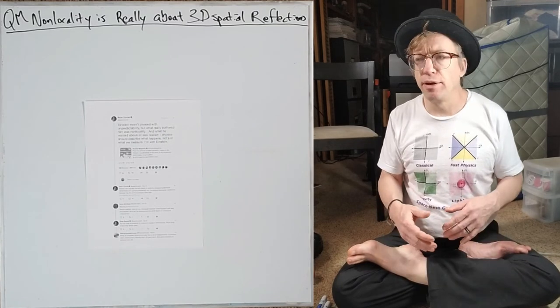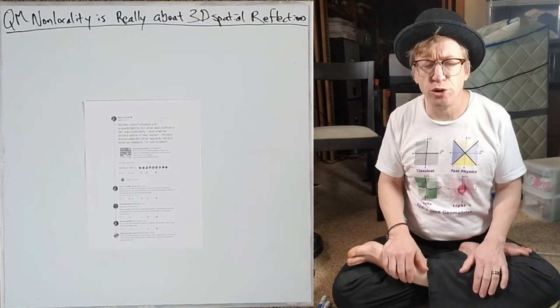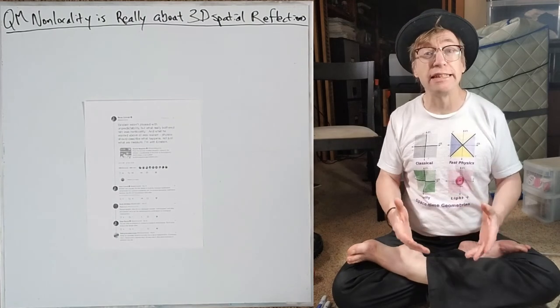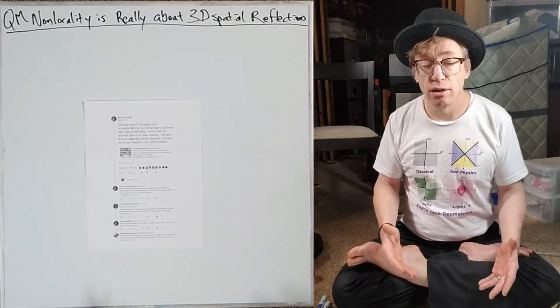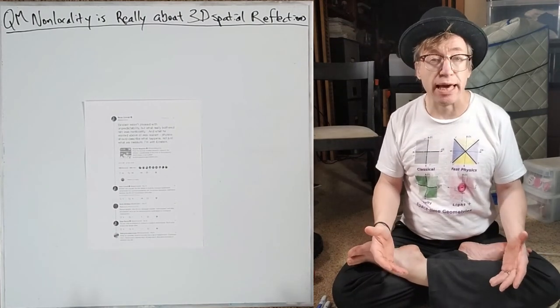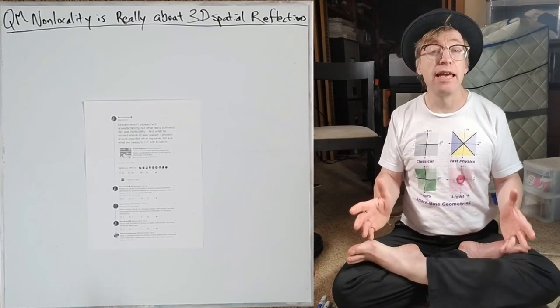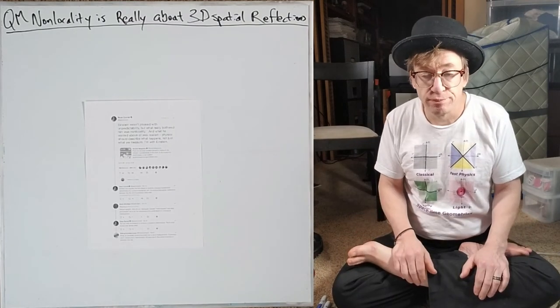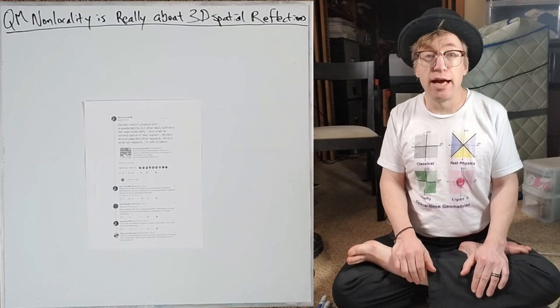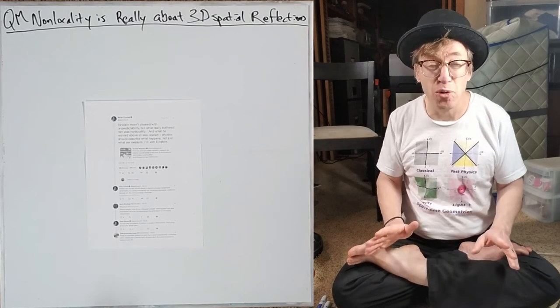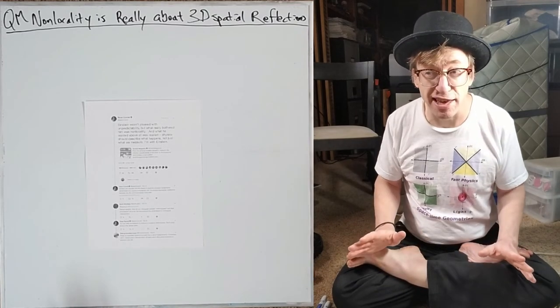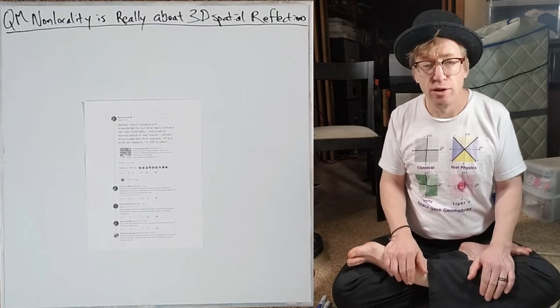His paper in 1932 really challenged interpretations of quantum mechanics by saying there might be hidden variables here. It was a long time before anybody could actually show that maybe that was wrong.